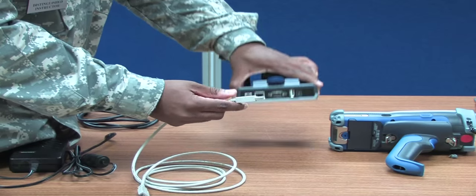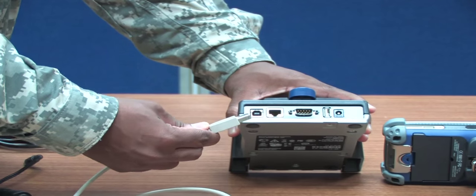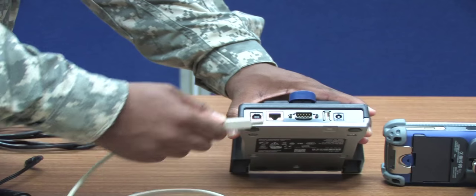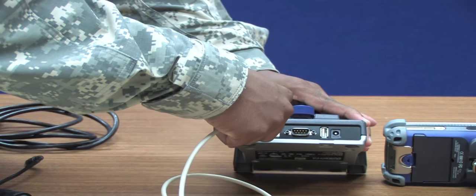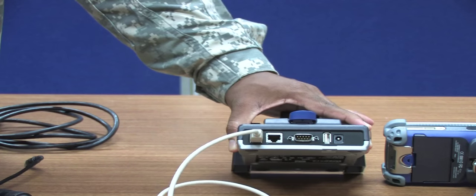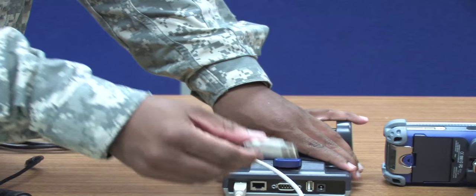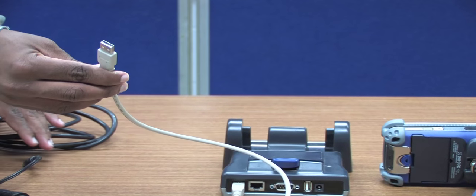Connect USB Type B into the AD5 Cradle Docking Station. Connect USB Type A into the back of the Laptop or CPU.